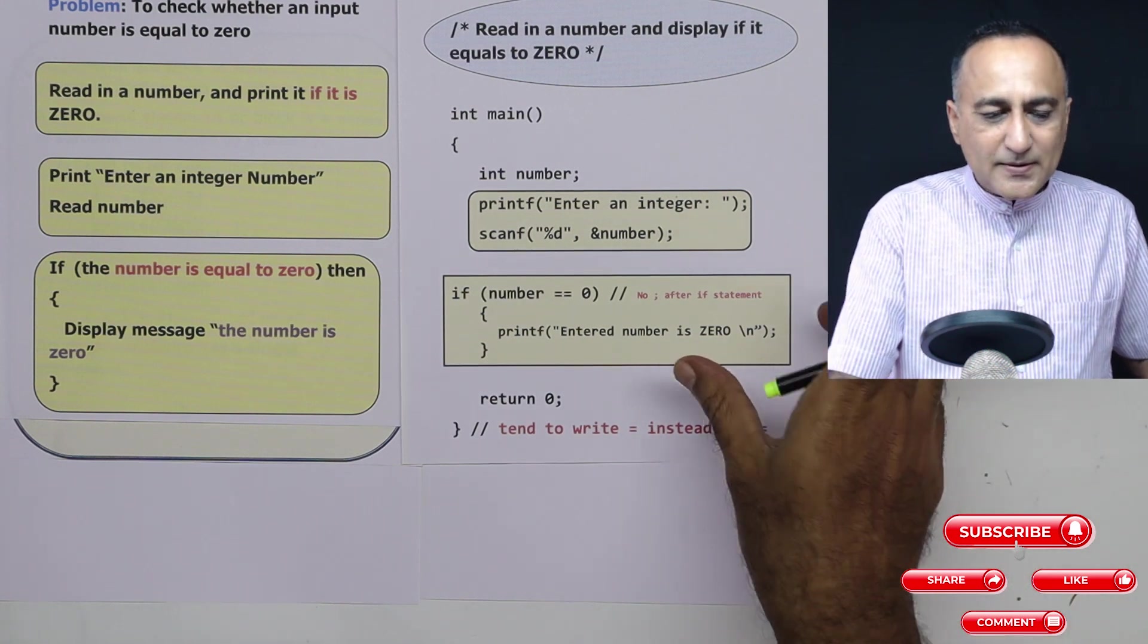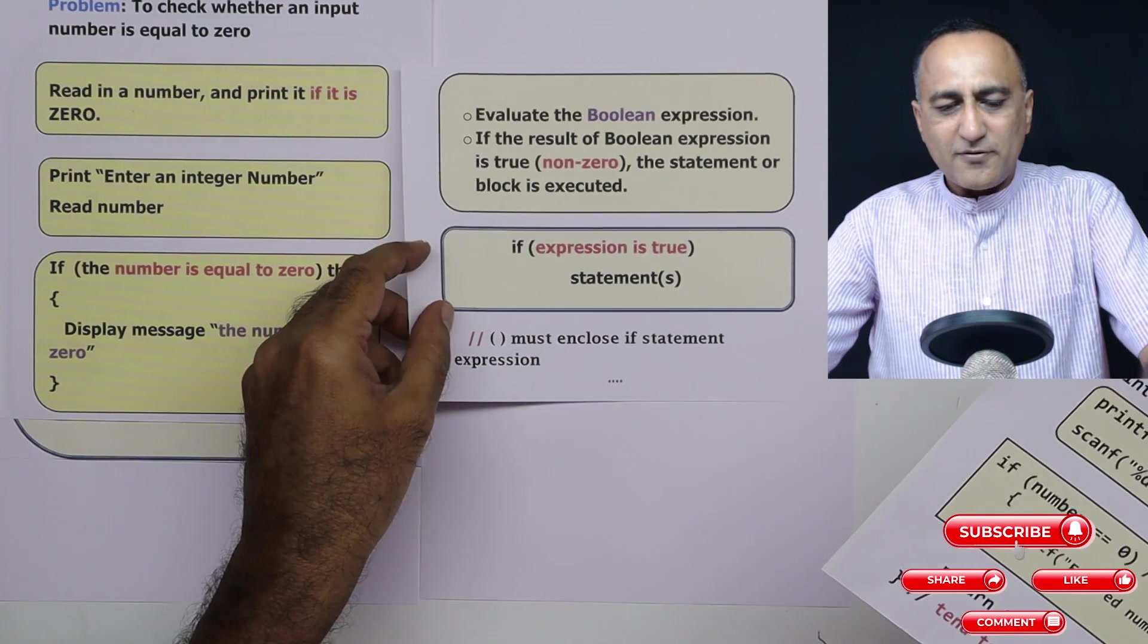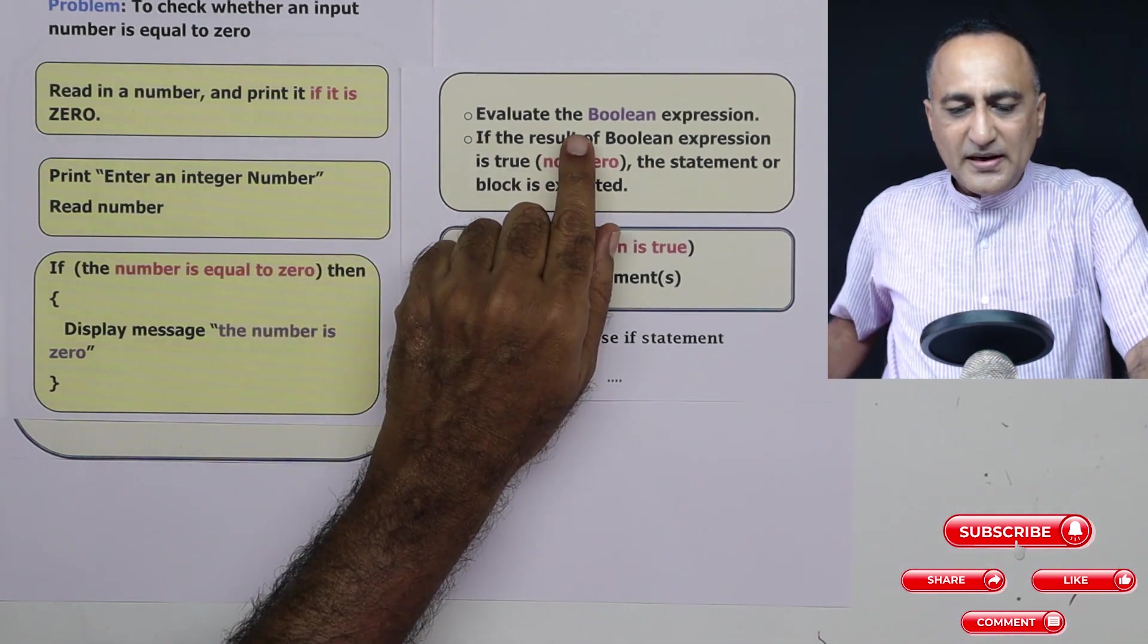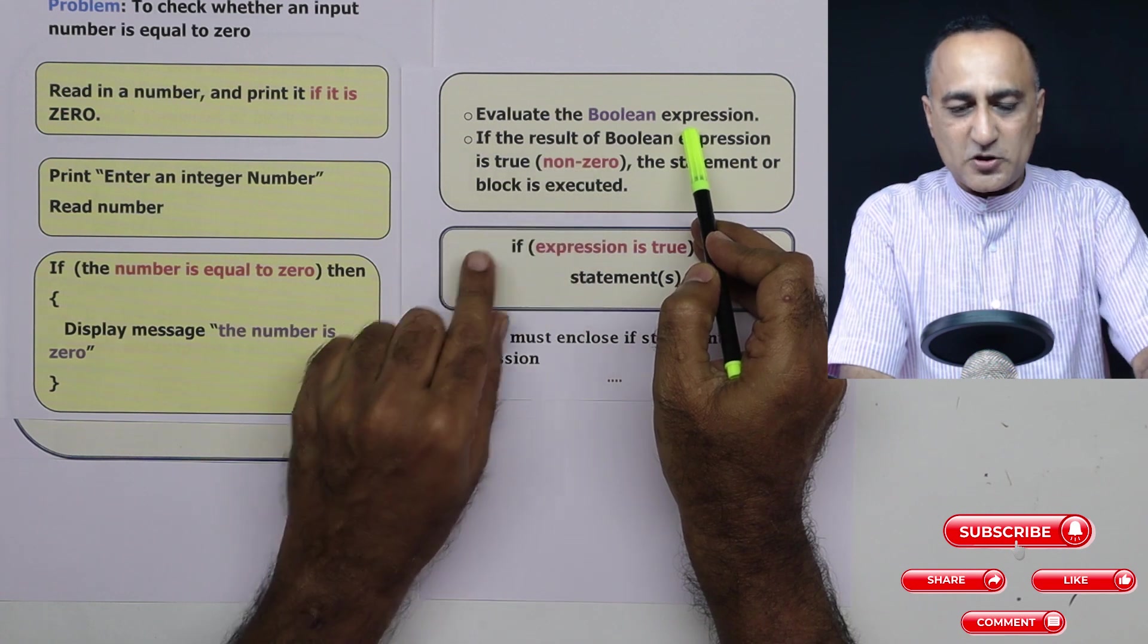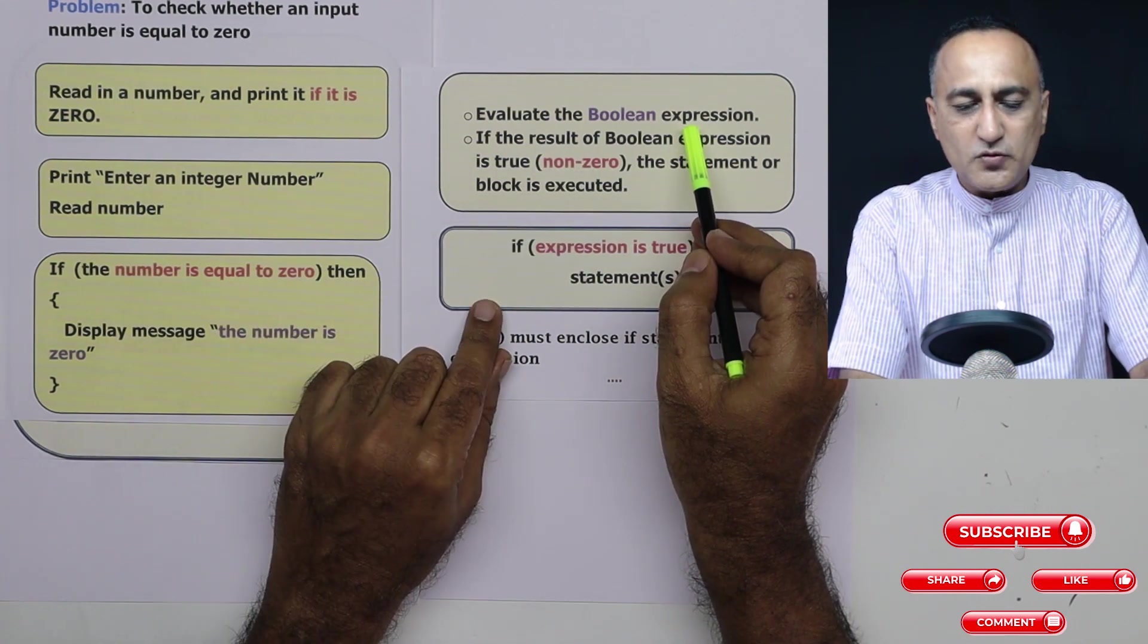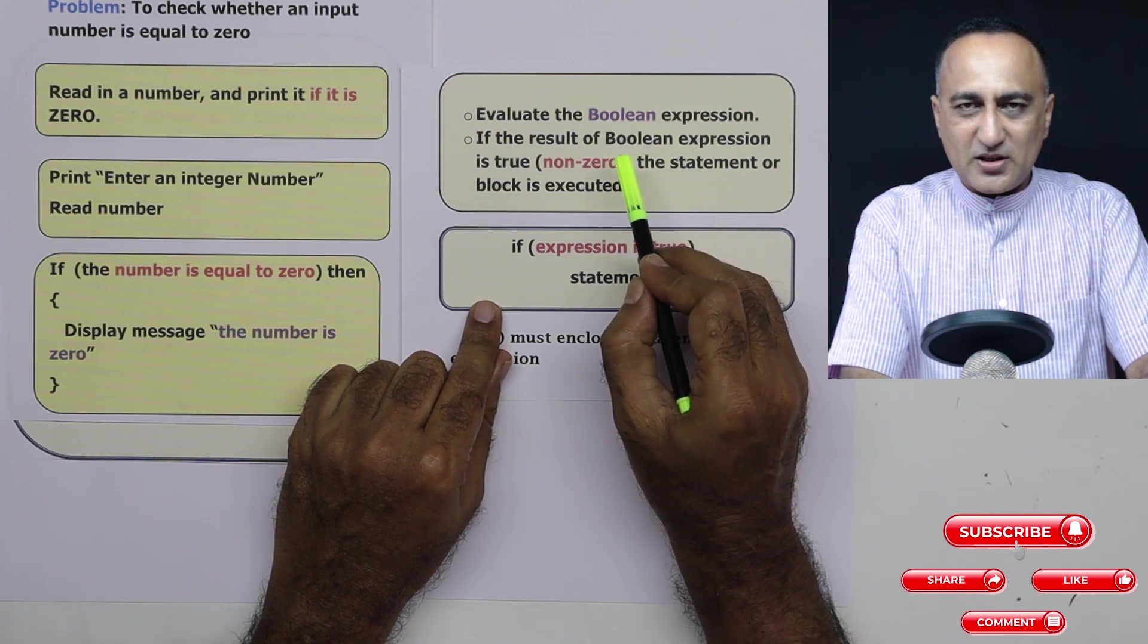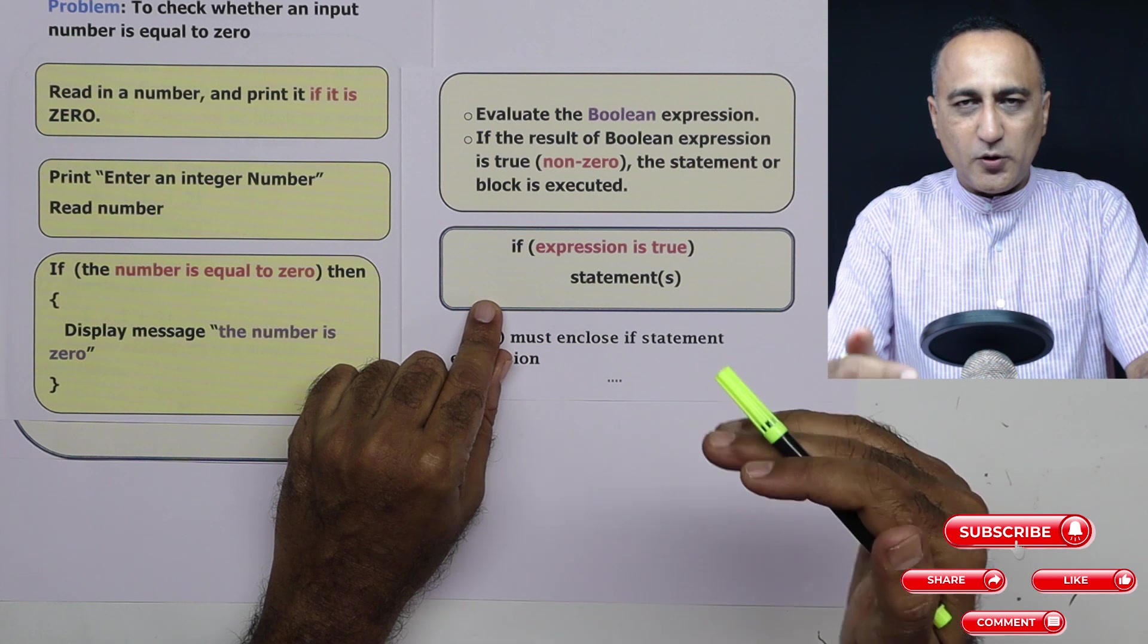So how does an if statement work? This is the working of an if statement. It evaluates a boolean expression. In our case, the boolean expression was number equal to zero based on the result of the boolean expression. That means if the result happens to be true, it will do some code.